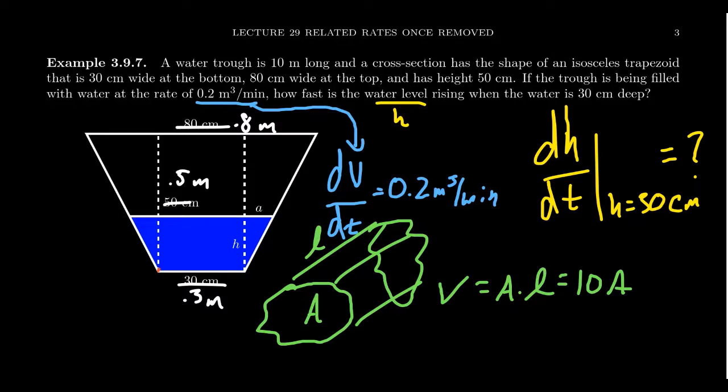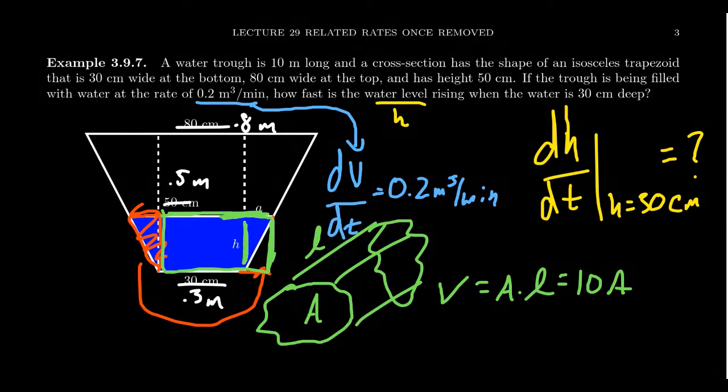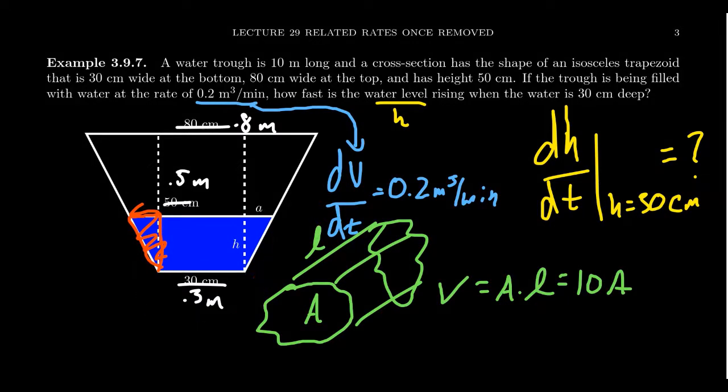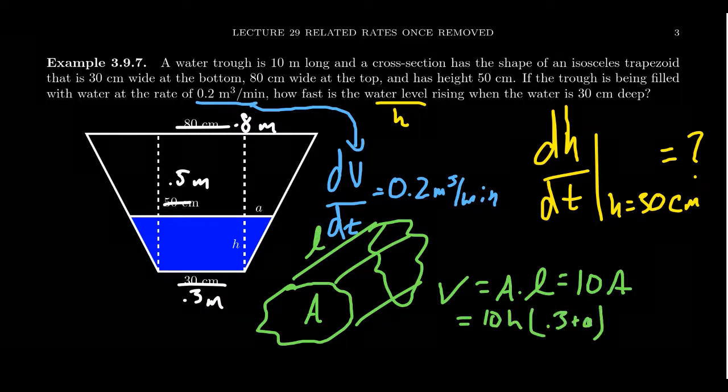Notice, if you snip off this triangle right here and move it over here, then you actually form what turns out to be a rectangle, for which the length of the rectangle is equal to the height of this original trapezoid. And the width is equal to the shorter side plus this extra dimension A. I'm going to write this as 10 times, one dimension of that rectangle is going to be H, the height, but then we have to multiply it by this 0.3 plus the A value. So how do we figure out the A value?